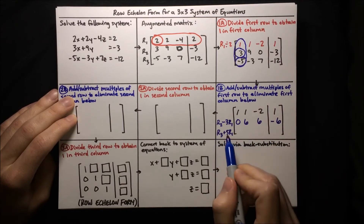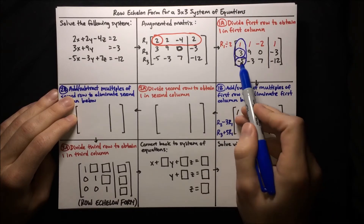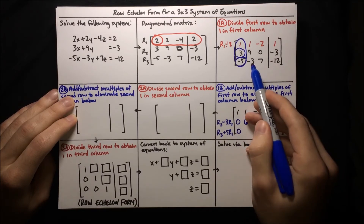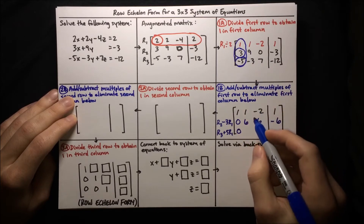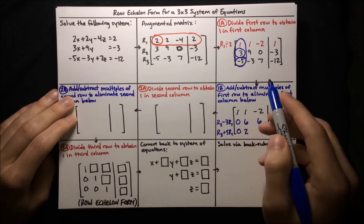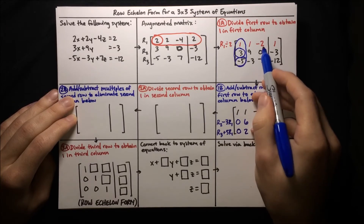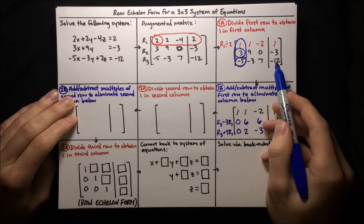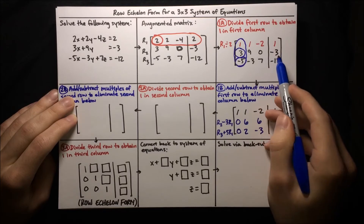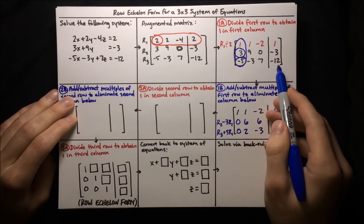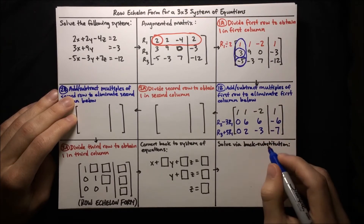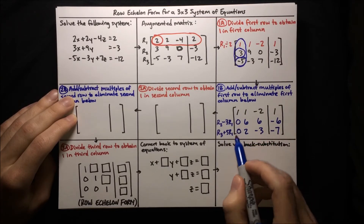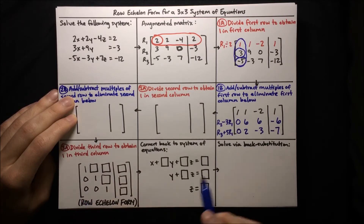For the next row, we're adding 5 times the first row. So negative 5 plus 5 times 1 is 0. Then negative 3 plus 5 times 1 is 2. And then 7 plus 5 times negative 2 is 7 minus 10, so negative 3. Now we've got our column of 1, 0, 0, and that's what we wanted.